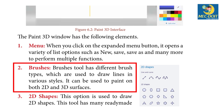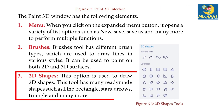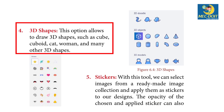2. Brushes — the Brushes tool has different brush types which are used to draw lines in various styles. It can be used to paint both 2D and 3D surfaces. 3. 2D Shapes — this option is used to draw 2D shapes. This tool has many ready-made shapes such as lines, rectangles, stars, arrows, triangles, and many more.